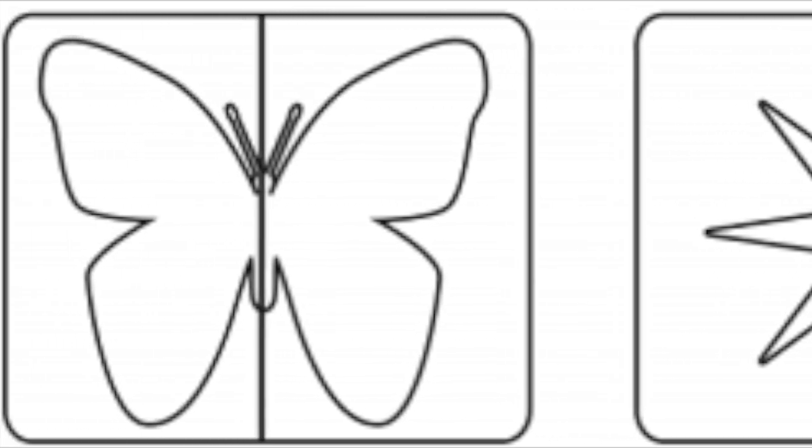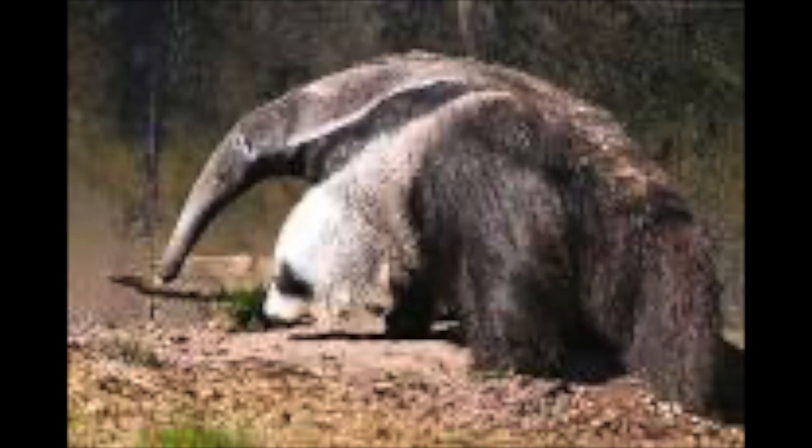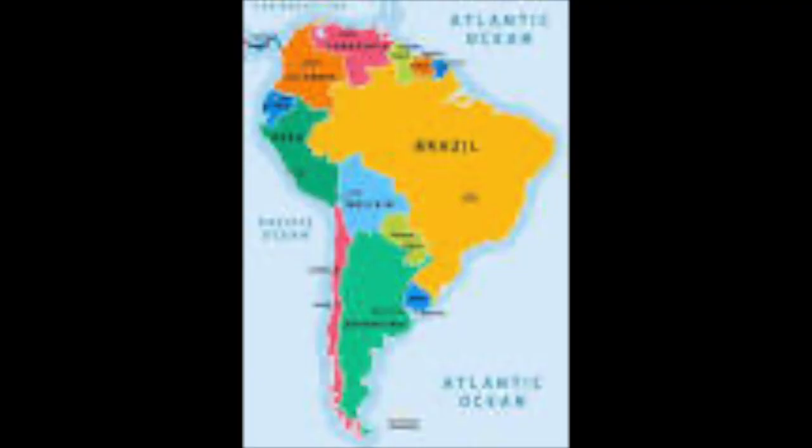As we get started, let's take a look also at some real anteaters. Anteaters are mammals that have long skinny snouts, long foreclaws, and bushy tails. The giant anteater is the largest of four different species.